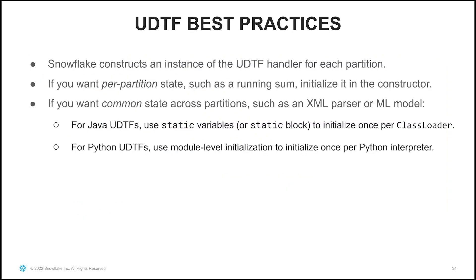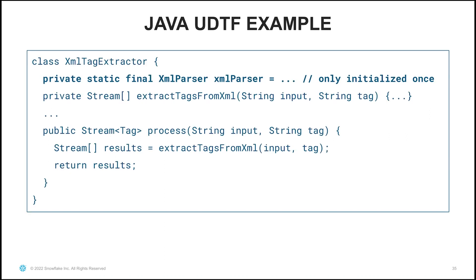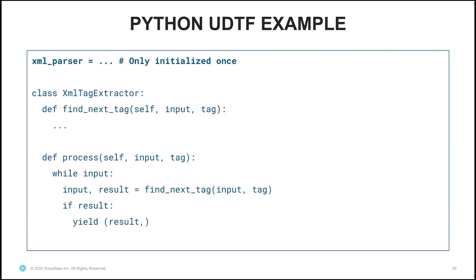Snowflake constructs an instance of the handler class for each partition it sees. If you want per-partition state such as a running sum, you can initialize it in the constructor. For shared state such as an XML parser or ML model, you should use static variables for Java UDTFs — initialized once per class loader in a static block. For Python UDTFs, use module-level initialization to initialize once per Python interpreter process, so that even though the handler class is constructed for every partition, the shared resource is created only once.